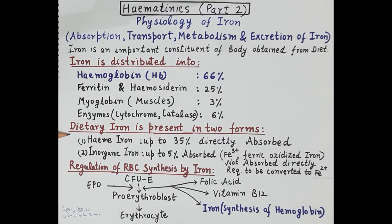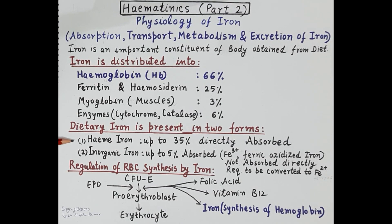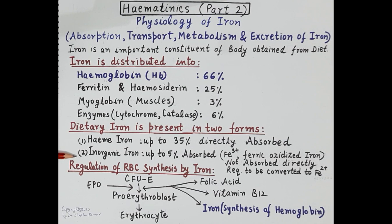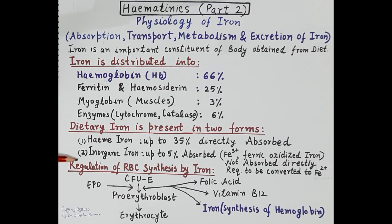Iron is not synthesized in the body and is provided only by the diet. The diet contains two types of iron: heme iron and inorganic iron. Heme iron is present in foodstuffs like meat and poultry, whereas inorganic iron is found in green leafy vegetables, for example spinach, jaggery, and dates.